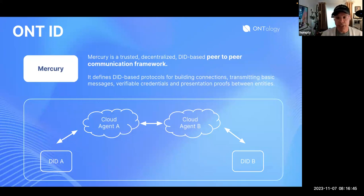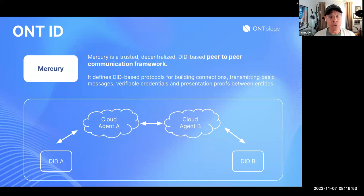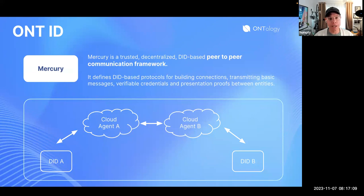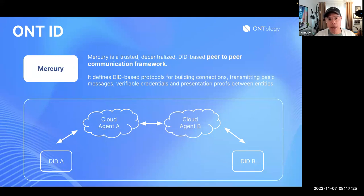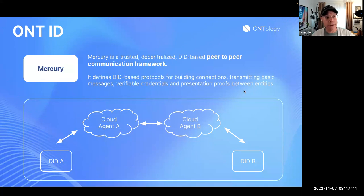Mercury is one I would love to see someone build with, because I'm a big fan of creating user experiences that are familiar and fun. When you think of communication platforms — WhatsApp, WeChat, Messenger — these peer-to-peer platforms are familiar. Mercury allows you to connect and transmit messages using DIDs and VCs. Being able to leverage self-sovereign technology like DIDs and VCs in a messaging context would be incredibly valuable to build.